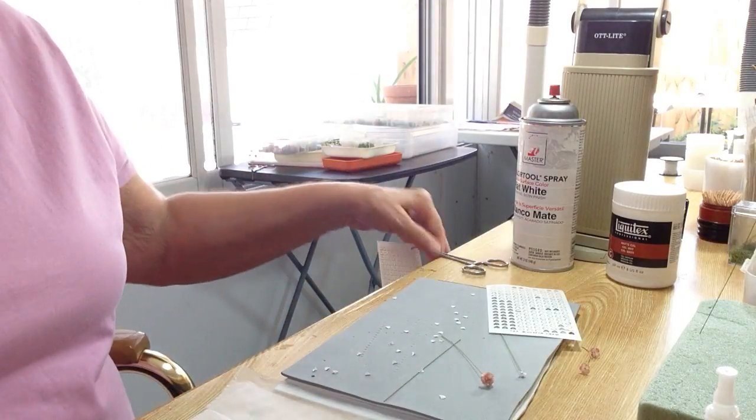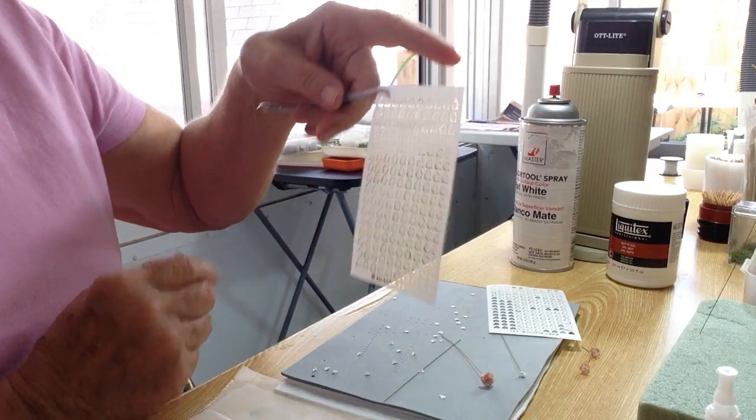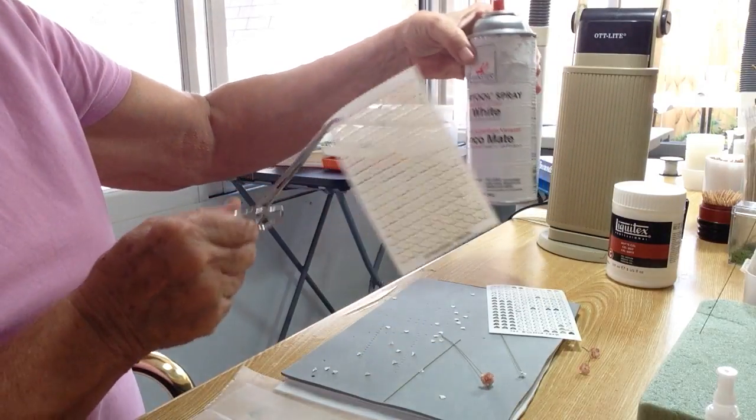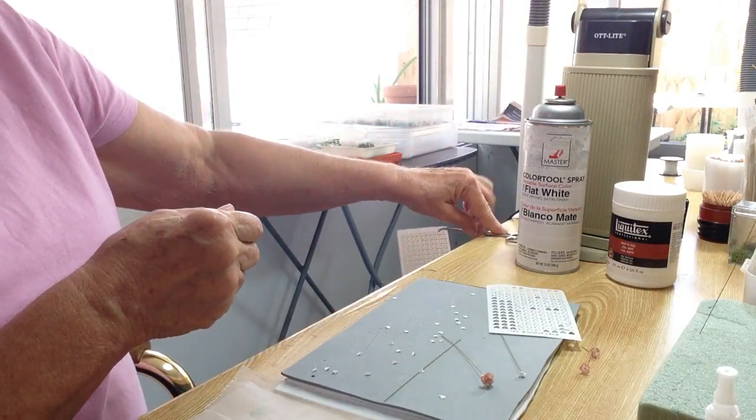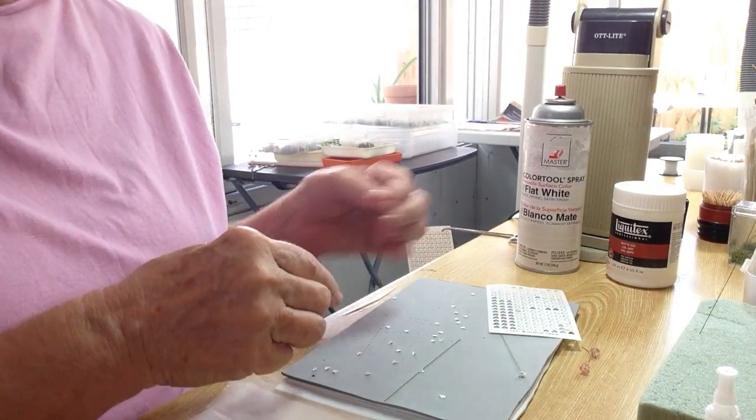First thing I did was I took the sheet of carnation petals and I sprayed it with Design Master spray paint, both sides, and then hung it to dry. I do this outside on a piece of cardboard so that I don't make a big mess.